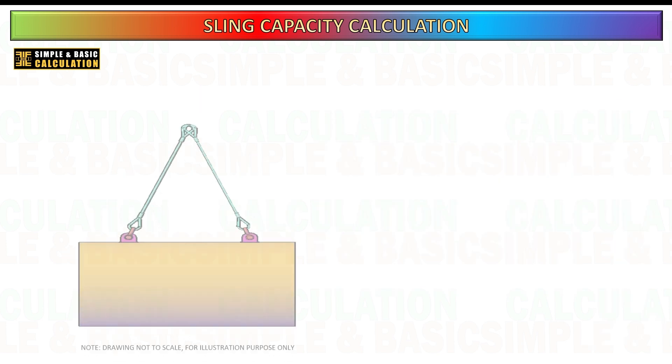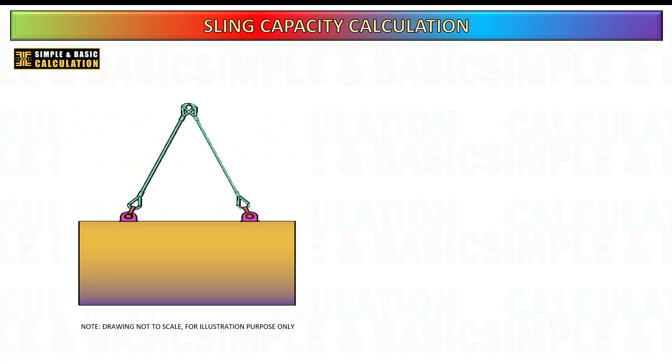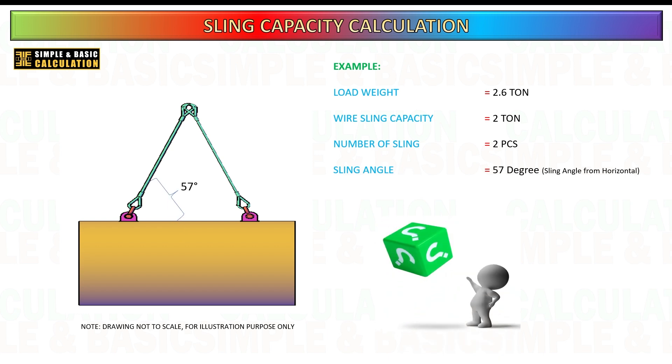For this example, let us consider a scenario where the weight of the load to be lifted is 2.6 tons. We will be using two wire slings, each with a rated capacity of 2 tons. The angle between the slings and the horizontal is 57 degrees. The key question is whether these two slings, each rated at 2 tons, are sufficient to safely lift the load of 2.6 tons under the given conditions.